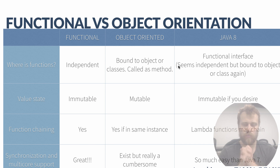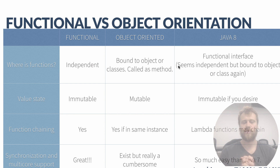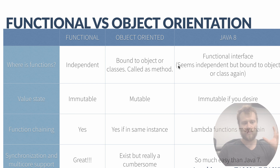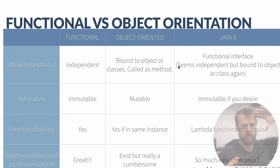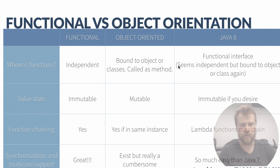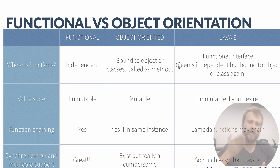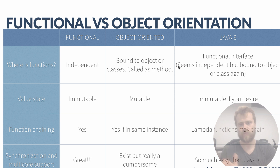Welcome. Let's compare functional programming and object-oriented programming. The first item is functions. In functional programming, functions are independent — you may define a function anywhere, refer to it, and invoke it. But in object-oriented programming, they are strictly bound to an object instance or directly to a class scope.